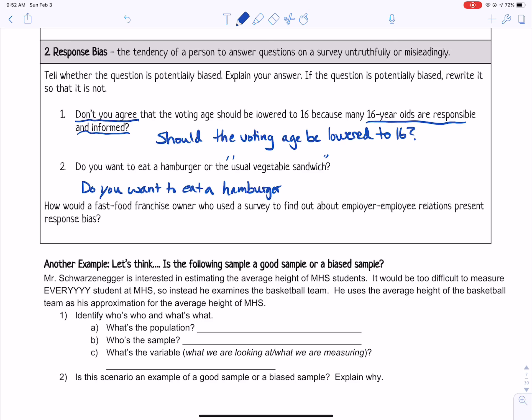There's a couple ways you could rewrite this one. Let's say, do you want to eat a hamburger? You could say, what would you like to eat? And leave it wide open. You could rewrite it various ways. Those are just two examples.